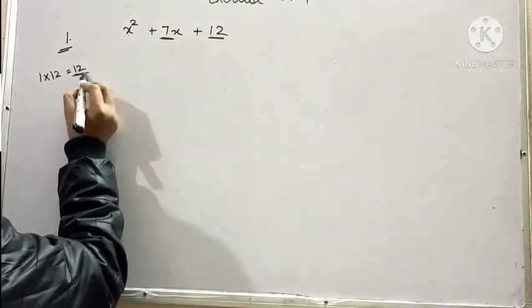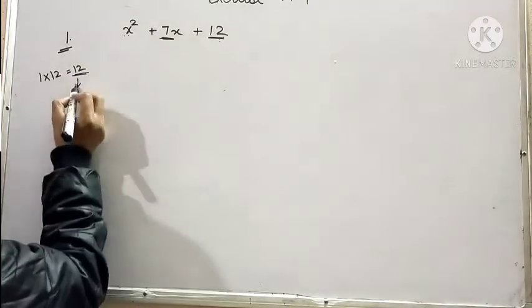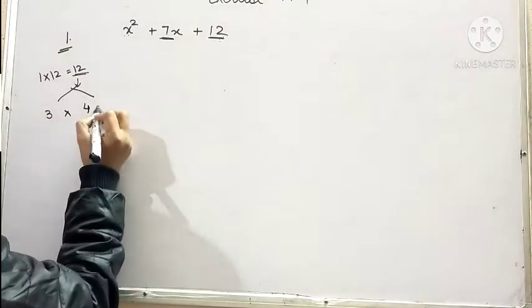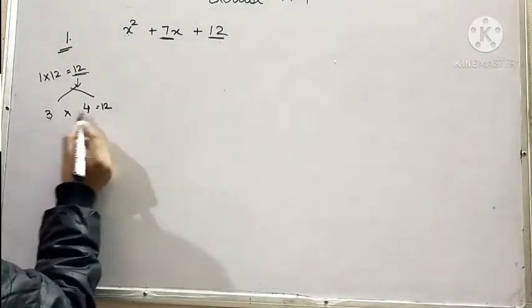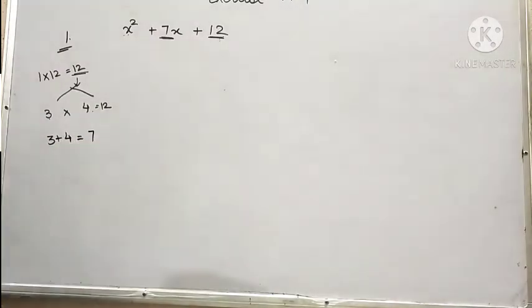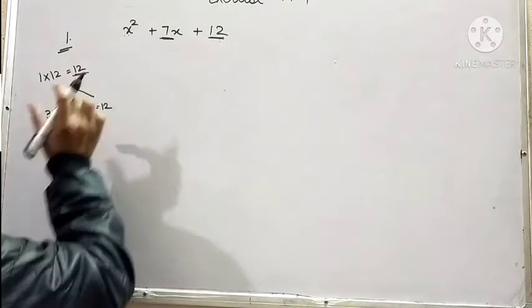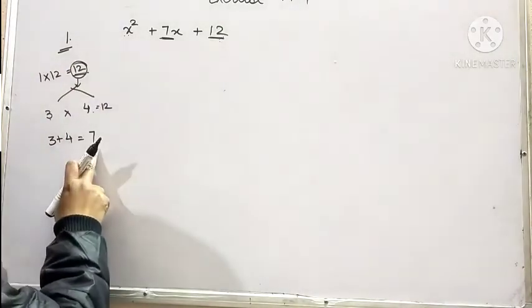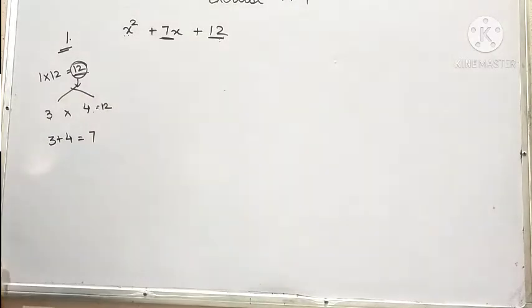See, when you factorize 12, you get its factors as 3 and 4. 3 times 4 is 12 and 3 plus 4 is equal to 7. So we are successful in finding factors of 12 whose sum is 7 and product is 12.